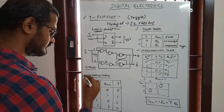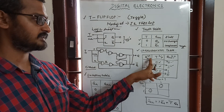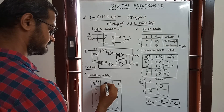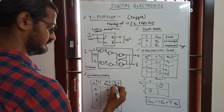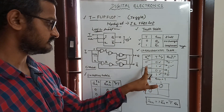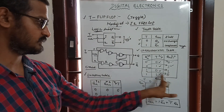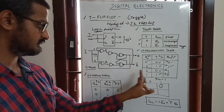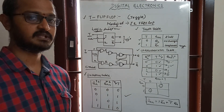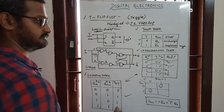Now here is the excitation table. The excitation table is derived from the characteristics table. It has present state, next state, and input T. When present state is 0 and next state is 0, T is 0. When present state is 0 and next state is 1, T is 1. When present state is 1 and next state is 0, T is 1. When present state is 1 and next state is 1, T is 0. This is the excitation table of the T flip-flop.